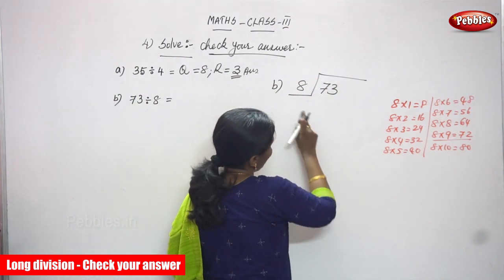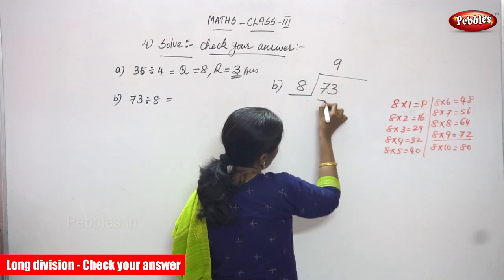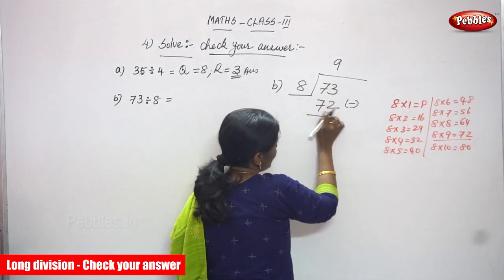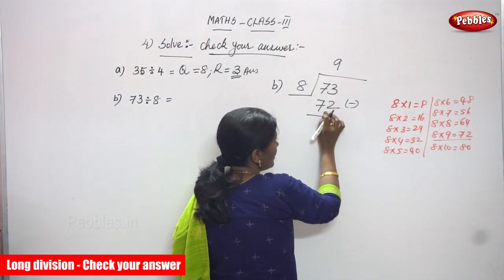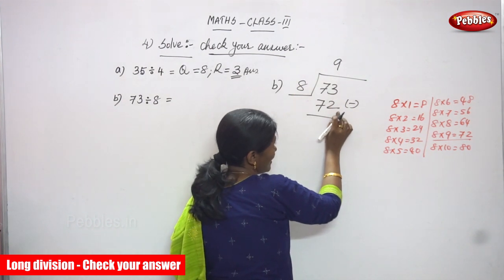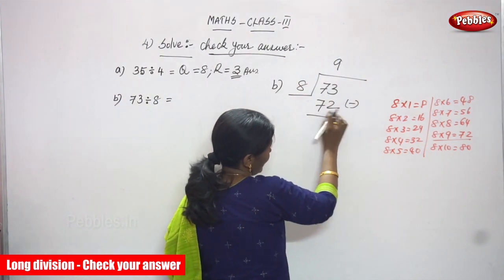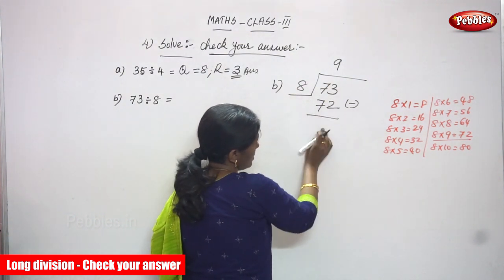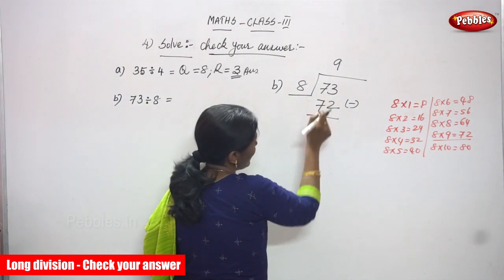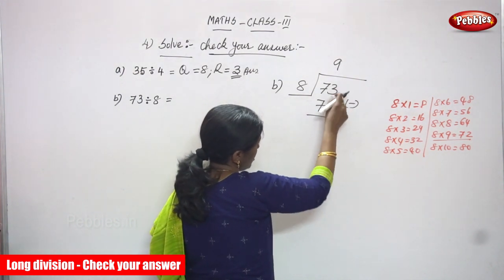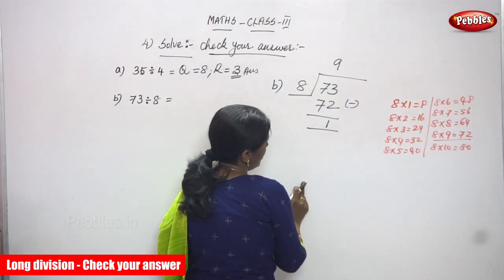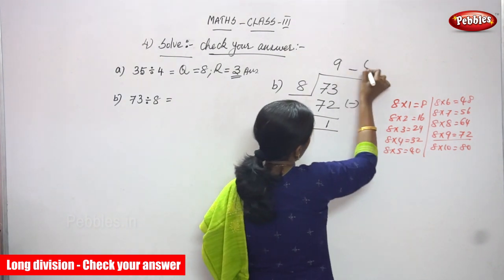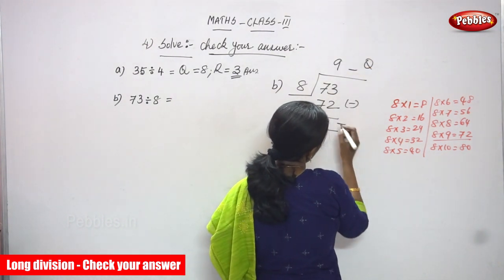8×9=72 — I've told you many times. This number must always be below or lesser than the dividend; that is called the nearest value. So 8×9=72. Now start subtracting: 3 minus 2 is 1, and 7 minus 7 is 0. So the quotient is 9 and the remainder is 1.